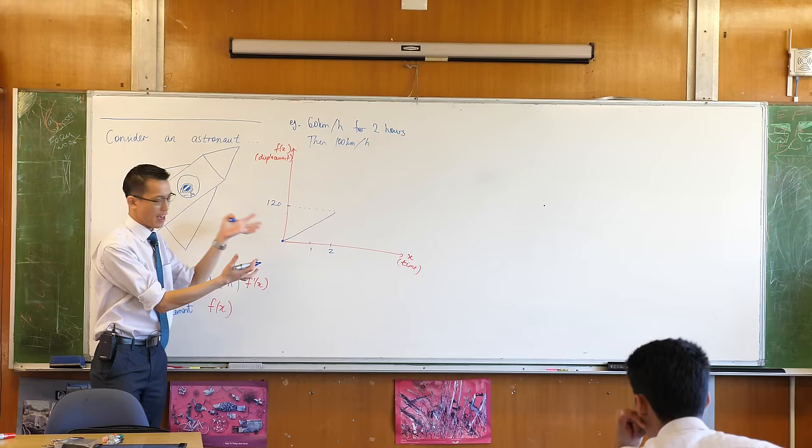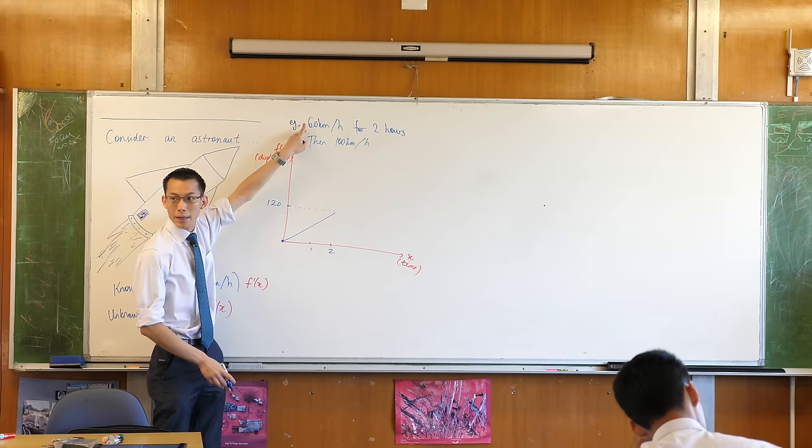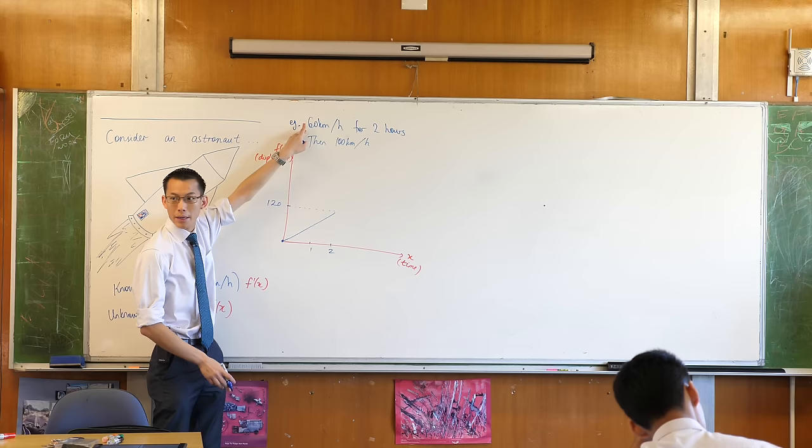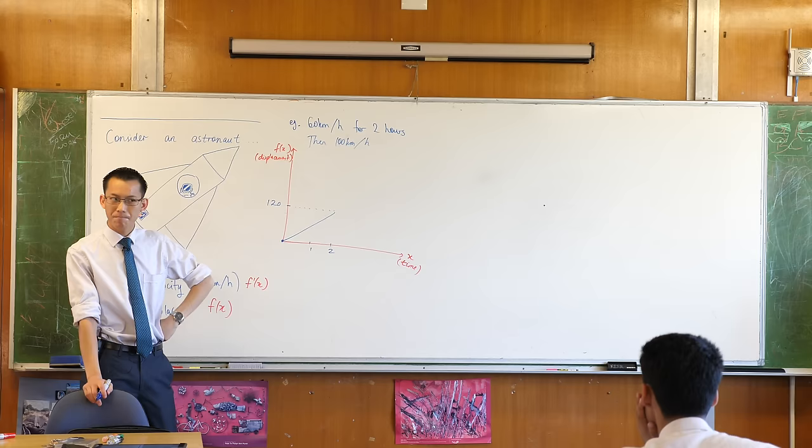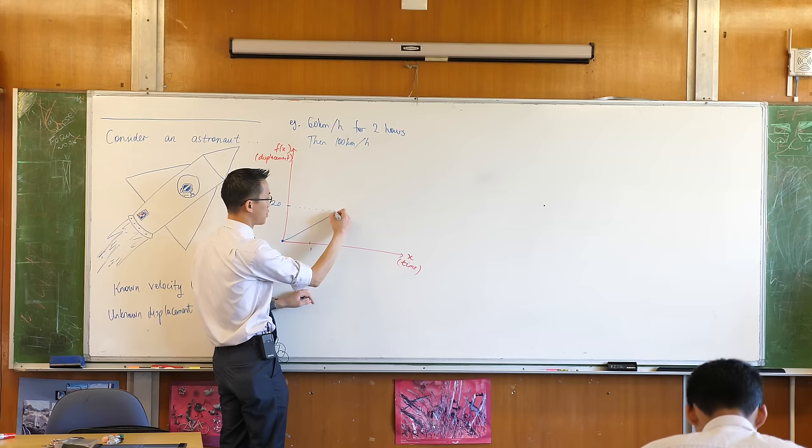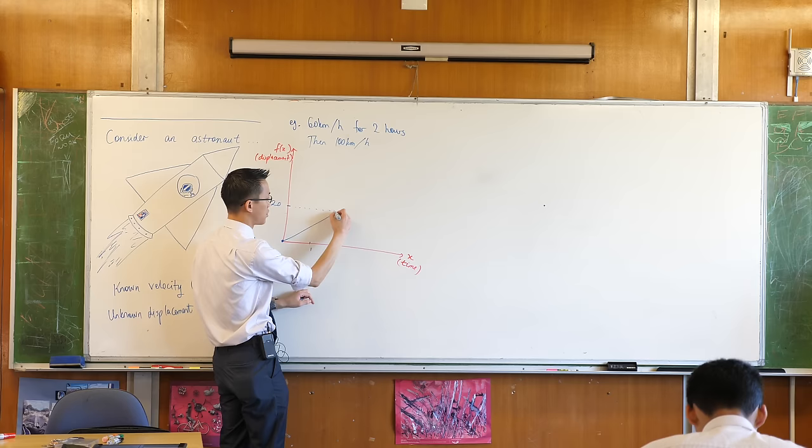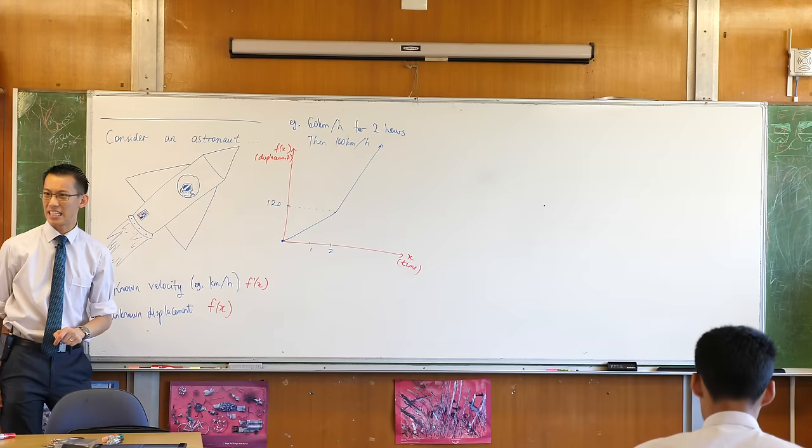But then the rocket changes speed. It increases speed dramatically. So therefore, I'm going to have a new function. It's going to change its gradient. It won't be 60 anymore. It'll be 100. Does that make sense? So what's that going to look like on my graph? Yeah, it's steeper. That's exactly right. So instead of just like this, it might be something like that. Except he started from 120 kilometers away from where he began. So something that looks like maybe this.